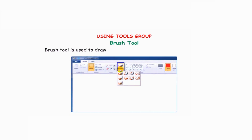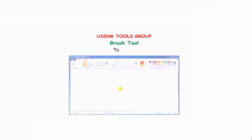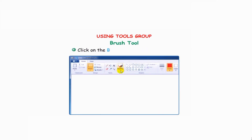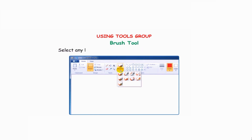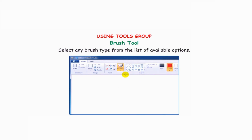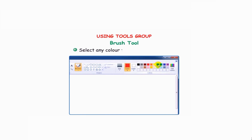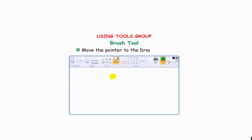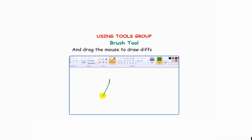Brush tool: the brush tool is used to draw objects with different kinds of brushes. To use it, click on the brushes drop-down arrow and select any brush type from the list of available options. Select any color from the colors group and move the pointer to the drawing area. Press and hold down the left mouse button and drag the mouse to draw different lines.